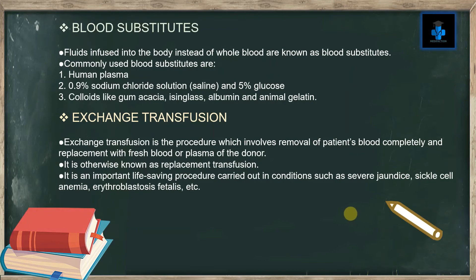Fluids infused into the body instead of whole blood are known as blood substitutes. Commonly used blood substitutes are: number one, human plasma; number two, 0.9% sodium chloride solution (saline) and 5% glucose; number three, colloids like gum acacia, serum albumin, and animal gelatin.